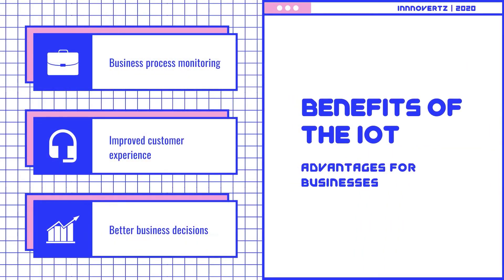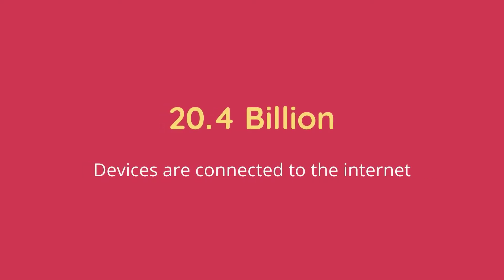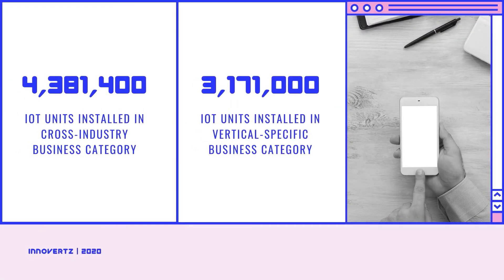There are many benefits of IoT, but particularly for business. These include business process monitoring, improved customer experience, and better business decisions. In 2020, 20.4 billion devices are connected to the Internet. There are 4,381,400 IoT units installed in the cross-industry business category, and 3,171,000 IoT units installed in the vertical-specific business category.